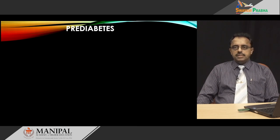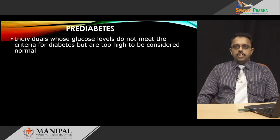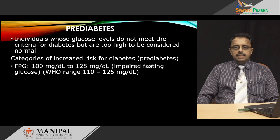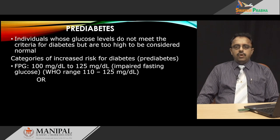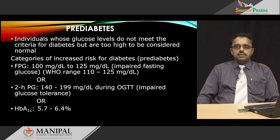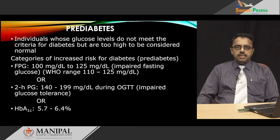There is a condition called pre-diabetes: individuals whose glucose results do not meet the criteria for diabetes diagnosis but are too high to be considered normal, and are at increased risk for developing diabetes later. If fasting plasma glucose is 100 to 125 mg/dL, it is called impaired fasting glucose (WHO prescribes 110–125). If the 2-hour plasma glucose after GTT is in the range of 140 to 199 mg/dL, it is called impaired glucose tolerance. If HbA1c is in the range of 5.7 to 6.4, these are all considered pre-diabetes. These people need to be followed up closely as they are at risk for developing diabetes.